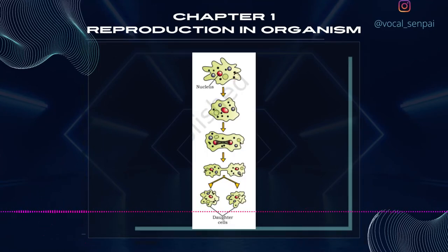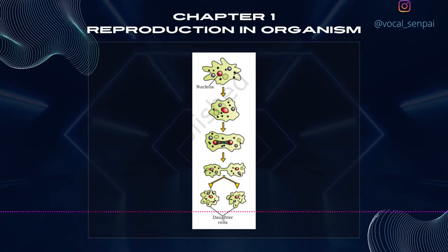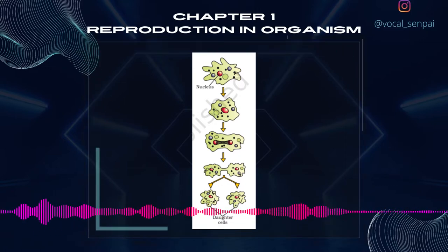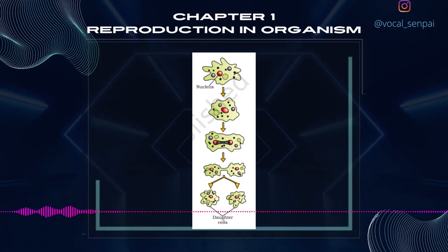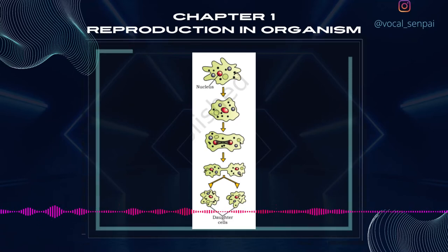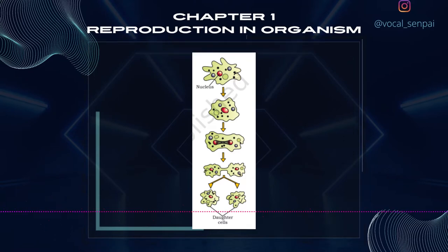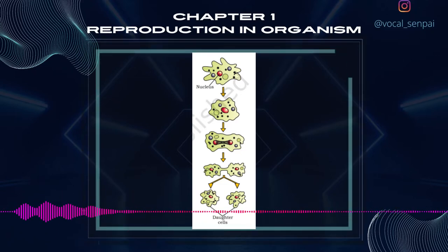Asexual reproduction is common among single-celled organisms and in plants and animals with relatively simple organizations. In protists and monerans, the organism or the parent cell divides by mitosis into two to give rise to new individuals, figure 1.2. Thus, in these organisms, cell division is itself a mode of reproduction. Many single-celled organisms reproduce by binary fission, where a cell divides into two halves and each rapidly grows into an adult, for example, amoeba and paramecium. In yeast, the division is unequal and small buds are produced that remain attached initially to the parent cell, which eventually gets separated and matures into new yeast cells.